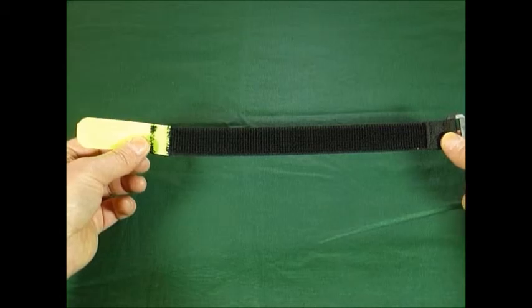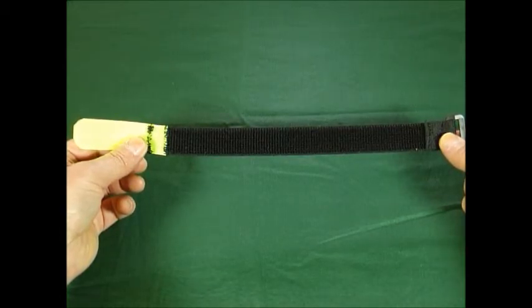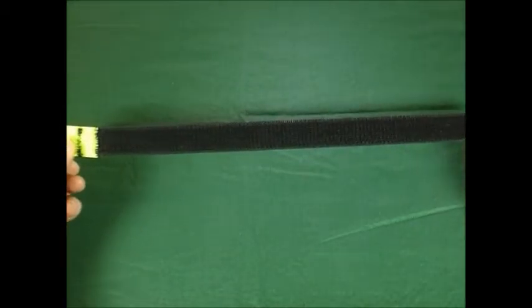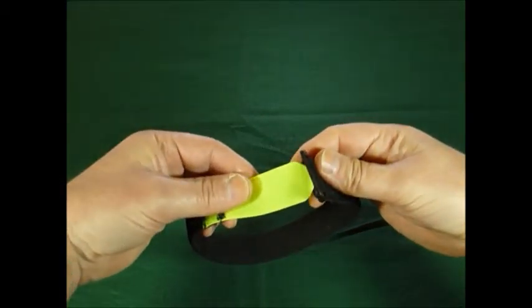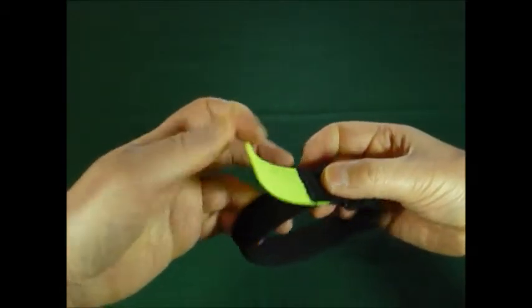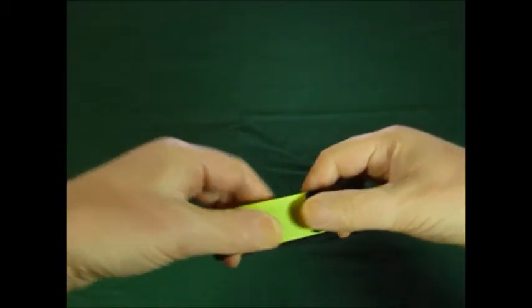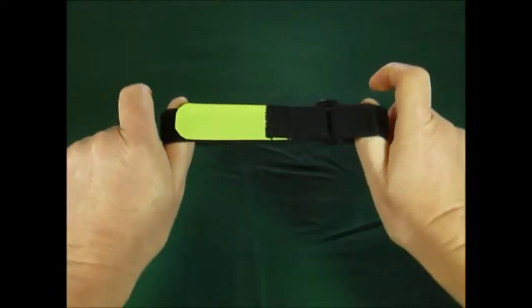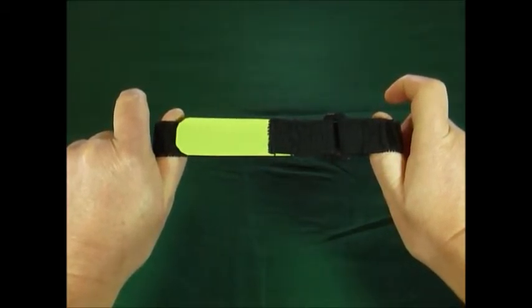The final one we have is an elastic hook and loop cinch strap. This looks like a normal hook and loop cinch strap, but as you can see, it's stretchy. You can attach it as normal because this is a knitted elastic. The hooks will stick to it, but it is also stretchy and can expand.